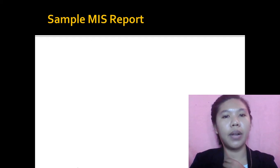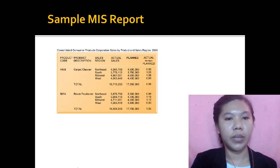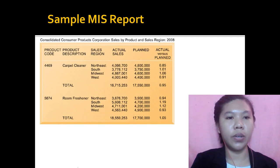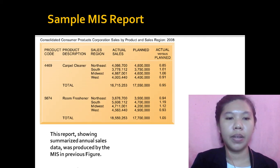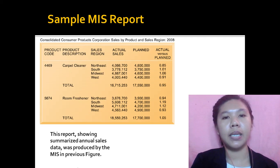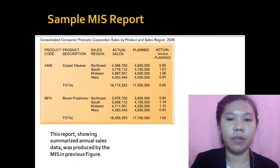Here is a sample MIS report. As we can see, there is a product code, product description, sales region, actual sales plan, and actual versus plan. This report showing summarized annual sales data was produced by the MIS system shown in the previous figures.